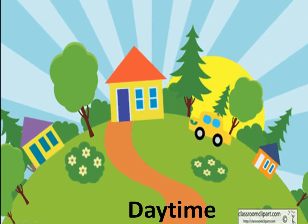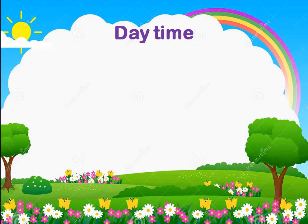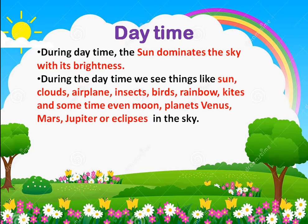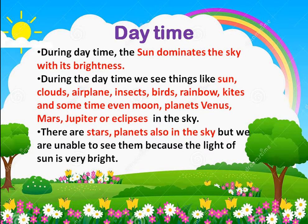In the daytime the sun is there and the light of the sun dominates the sky — it is very bright. In the daylight we may see things like the sun itself, clouds, airplanes, insects, birds, rainbow, kites, and sometimes even the moon. Planets like Mars, Jupiter, or eclipses in the sky can also be seen in the daytime. There are stars and planets also in the sky, but we are not able to see them because the light of the sun is very bright.